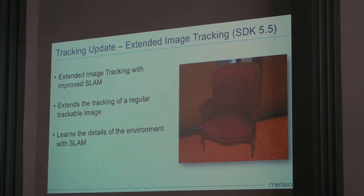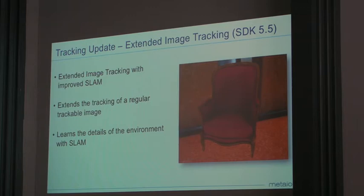Something we added also recently in SDK 5.5 is what we call expanded image tracking with improved SLAM. Basically, you have an AR marker — like a 2D marker — you scan it, you track it, and then you can move around and learn about the environment and augment it, for example placing a virtual chair. When you move away from the original marker, the environment still gets tracked. This is very stable tracking, and it's commonly used in our apps.